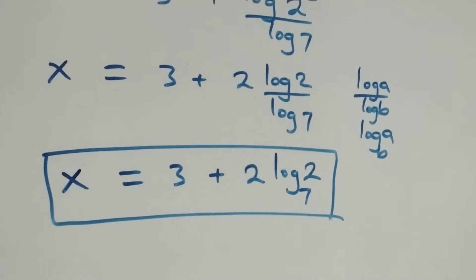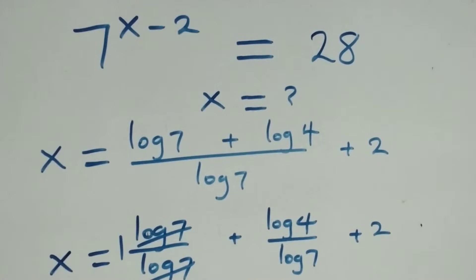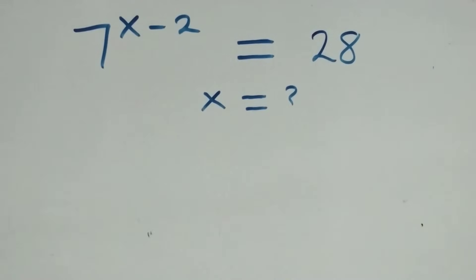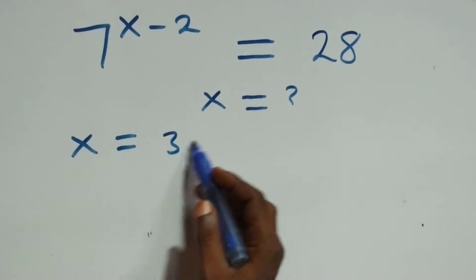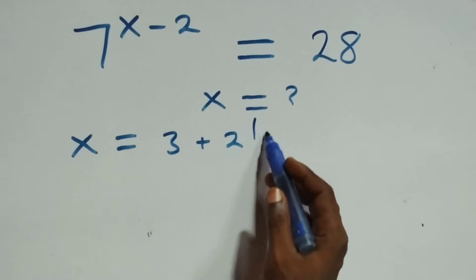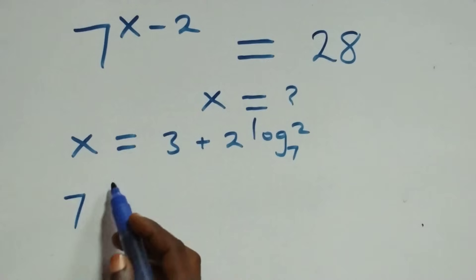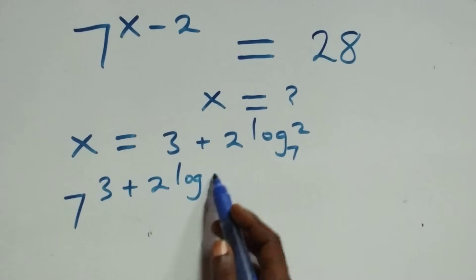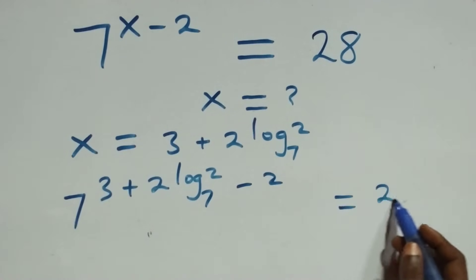Let's check if this satisfies the original equation. We substitute x equals 3 plus 2 log 2 to base 7 back in. What we have becomes 7 raised to power 3 plus 2 log 2 to base 7, then minus 2, equals 28. In the exponent, 3 minus 2 gives 1, so this becomes 7 raised to power 1 plus 2 log 2 to base 7, equals 28.